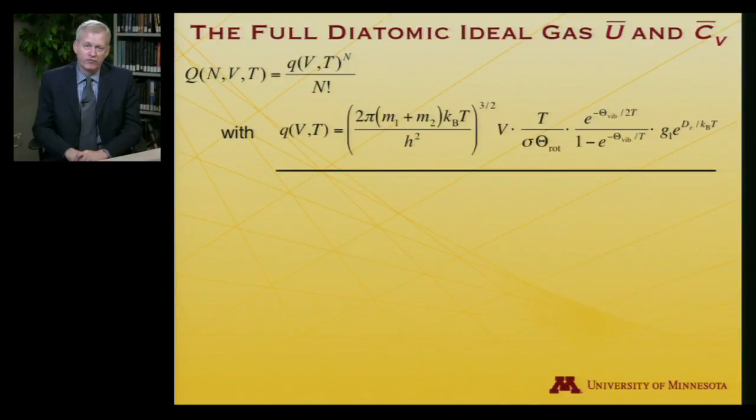If we now want to form from that full molecular partition function, the ensemble partition function, which now, in addition to depending on volume and temperature, depends on number of particles, recall that for an ideal gas, we take the molecular partition function to the n-th power, and we divide by n factorial. This is all still sort of a review of things we've done in the past. But what I want to do now is use that ensemble partition function and look at the internal energy and the heat capacity.